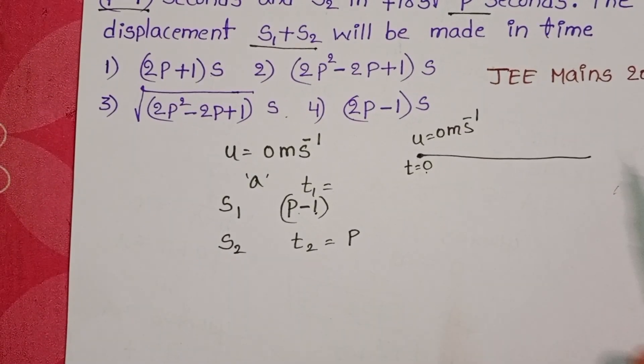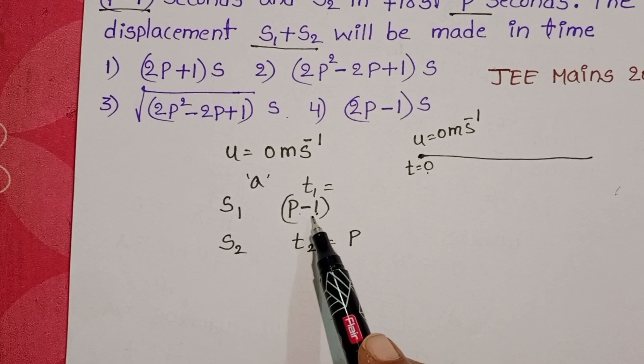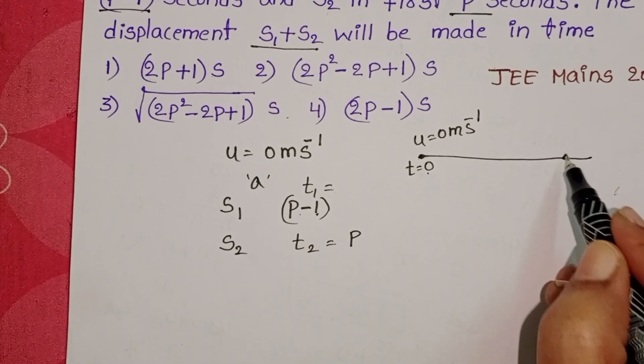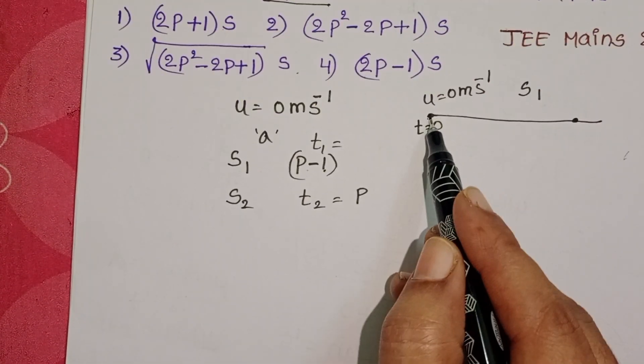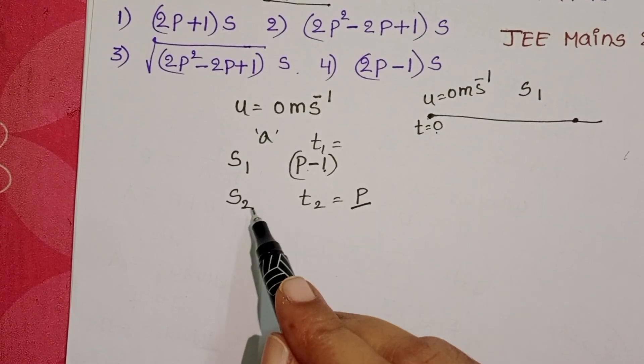Let us draw the diagram. Body starts from rest position. Within P-1 seconds, it covers a distance S1. And from starting onwards, within P seconds, it covers S2 distance.